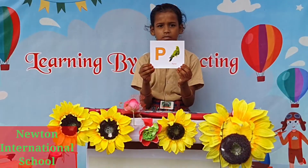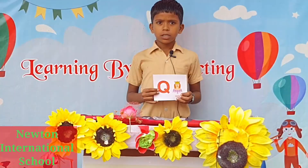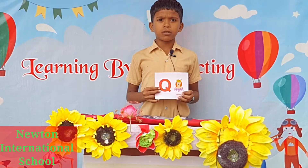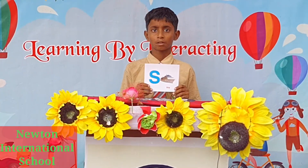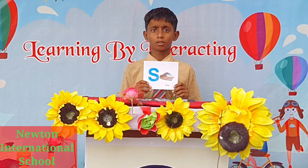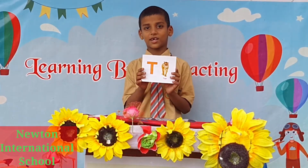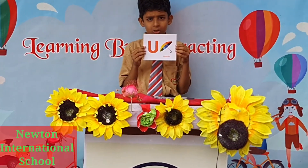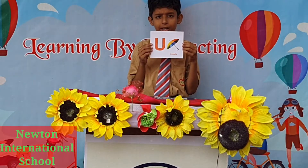...owl, P for pirate, Q for queen, R for rabbit, S for sheep, T for tiger, U for umbrella.